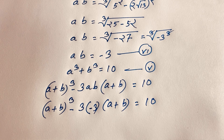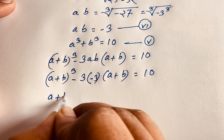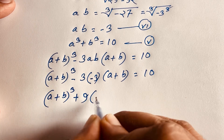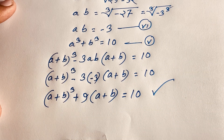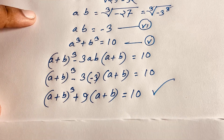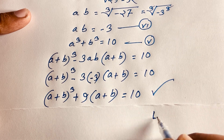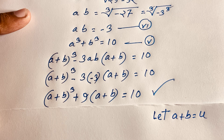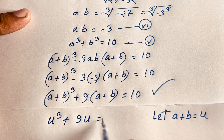The minus times minus gives plus, so this becomes (a plus b)³ plus 9 times (a plus b) equals 10. Now let u equal a plus b. Then we get u³ plus 9u equals 10.